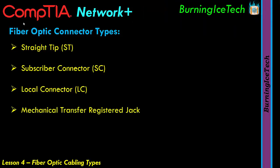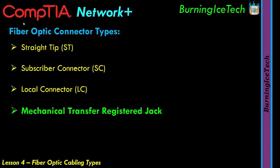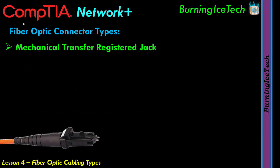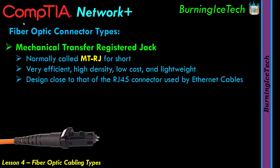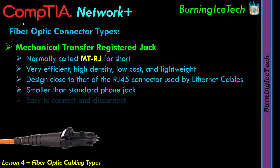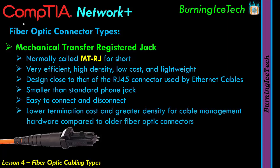The last connector on the list is mechanical transfer registered jack, usually called MT-RJ for short. This fiber connector type is a very efficient, high-density, low-cost, and lightweight optical fiber connector that has become very widely used in network hardware. The design of this connector is actually very close to that of the RJ45 connector used in ethernet networks, however it is smaller in size and consequently lower in cost. It is slightly smaller than a standard phone jack and is very easy to connect and disconnect. Compared to all other fiber optic connector types, this one offers a lower termination cost and greater density for cable management hardware.